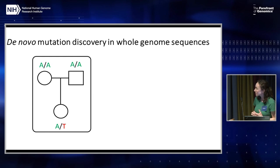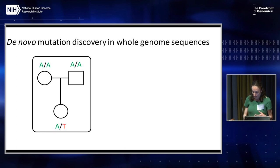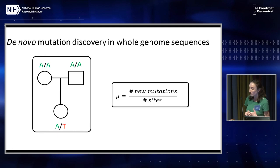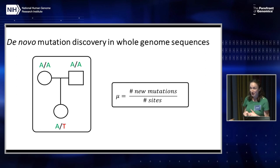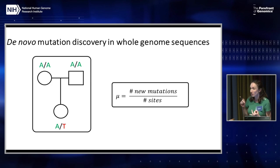New mutations are simply detected as variants present in the offspring but not seen in either parent. Using this strategy, the mutation rate can be calculated as the number of new mutations divided by the number of sites in the search space — the genome size. This sounds simple, but in practice it's really challenging, because there are key challenges associated with estimating both the numerator and the denominator of this simple equation.